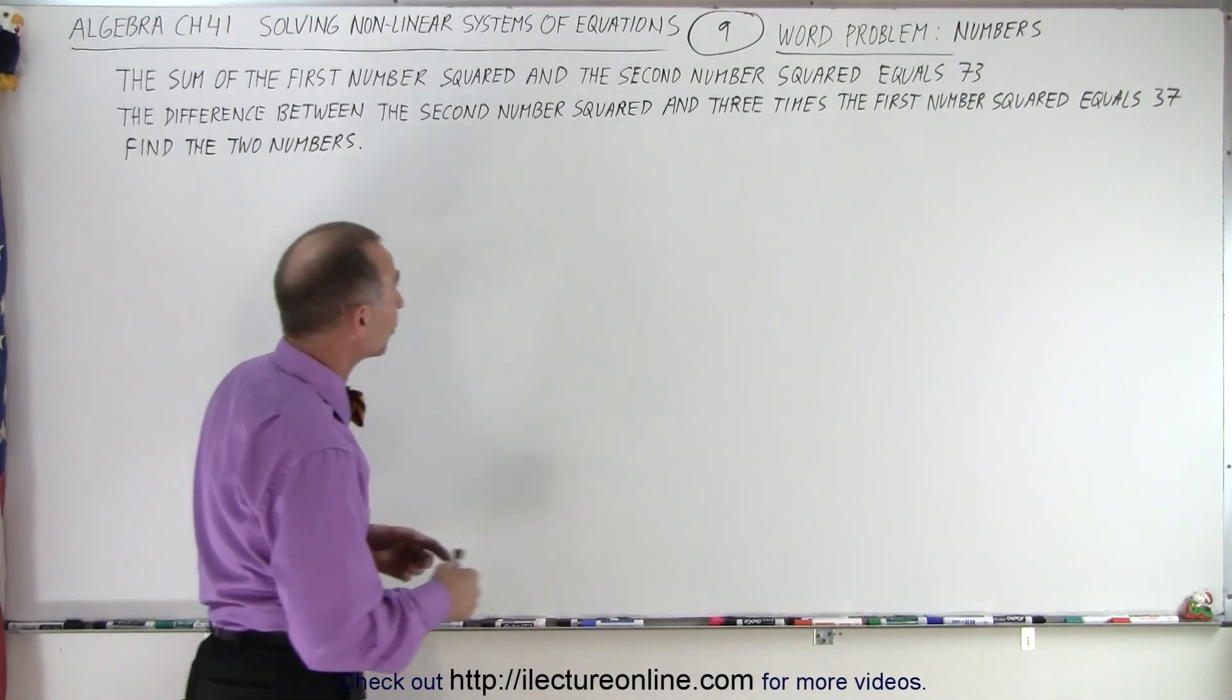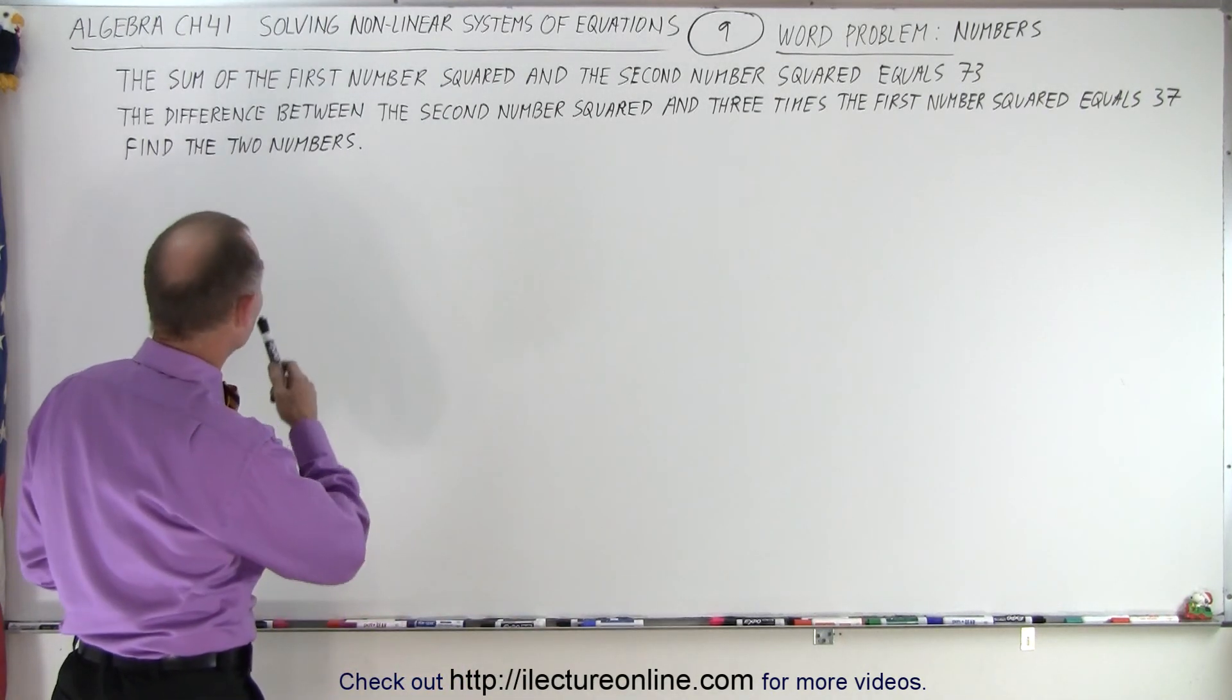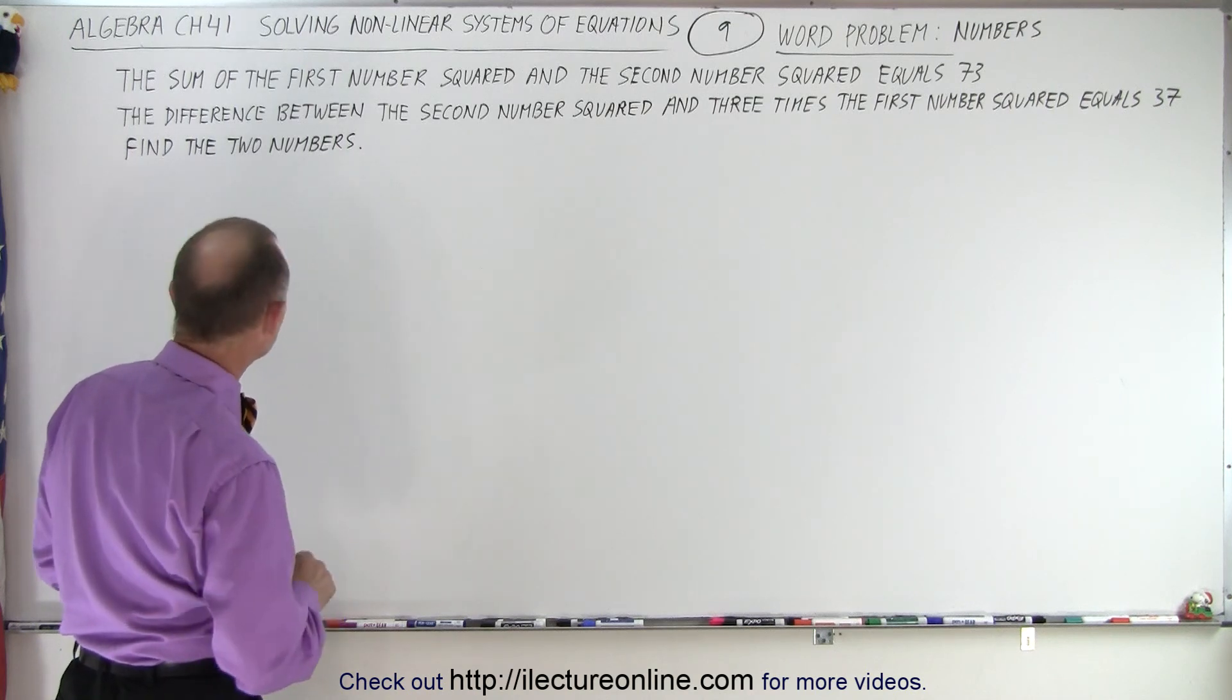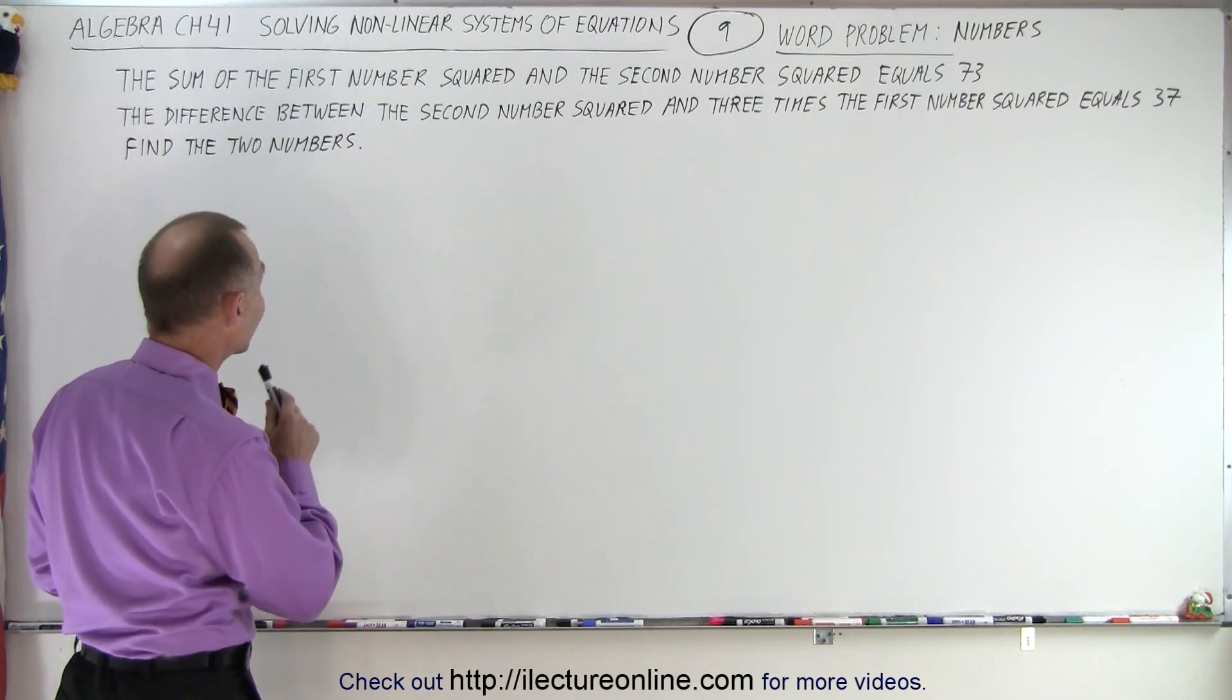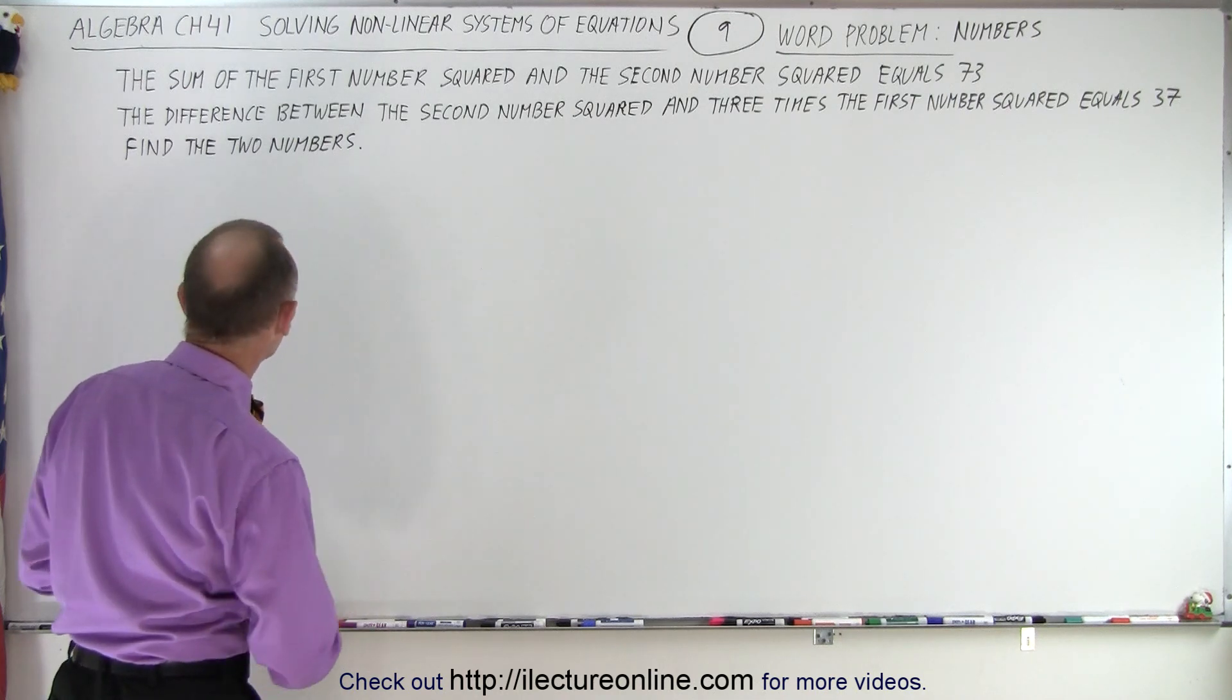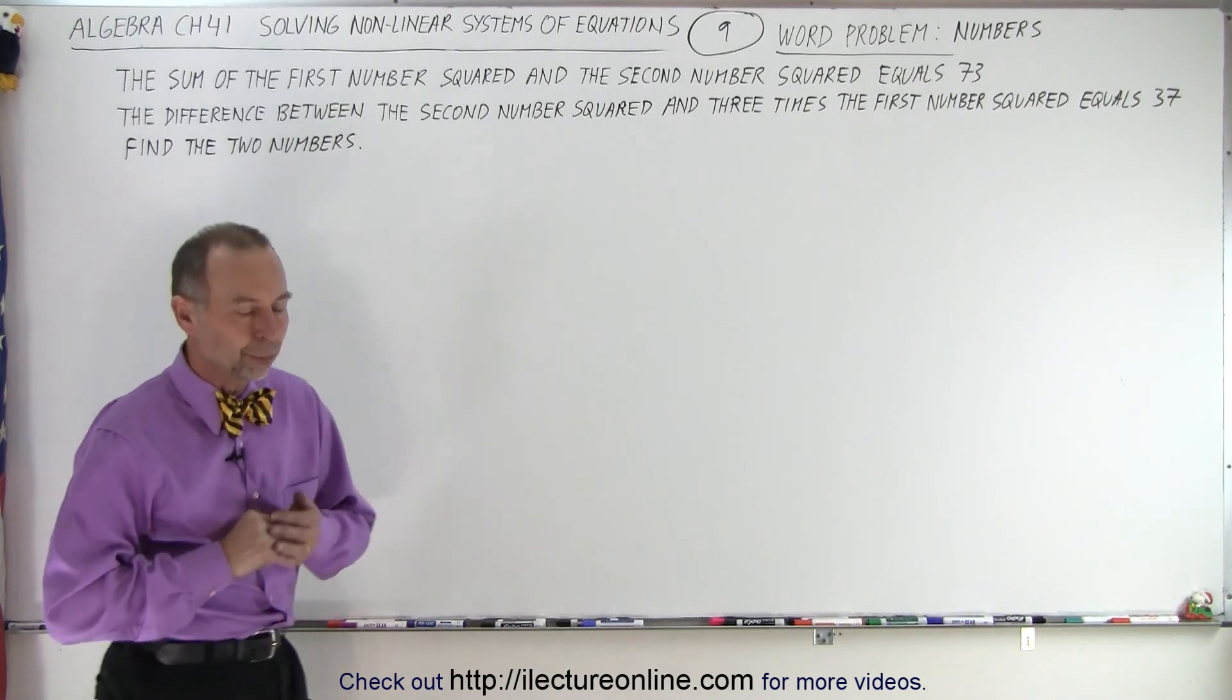So let's say we have two numbers. They tell us that the sum of the first number squared and the second number squared equals 73, and that the difference between the second number squared and three times the first number squared equals 37. Find the two numbers.